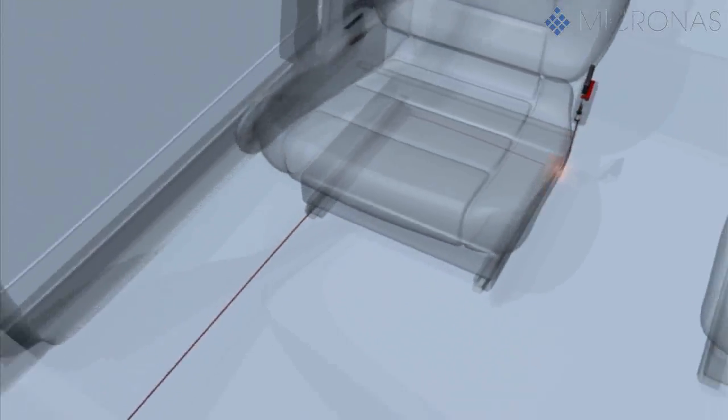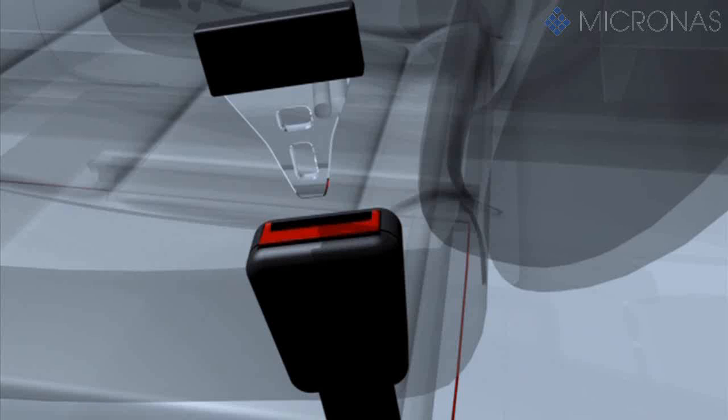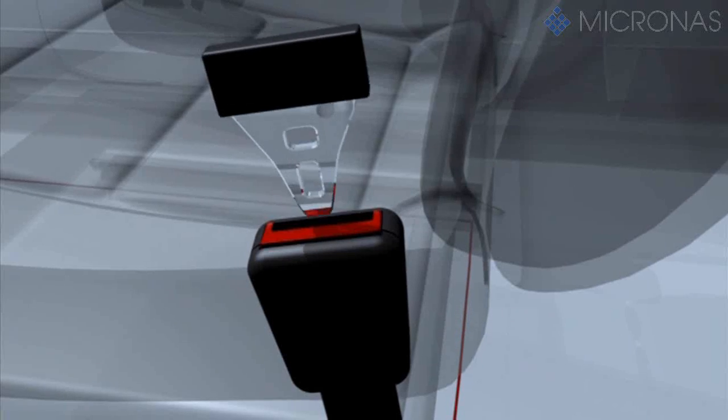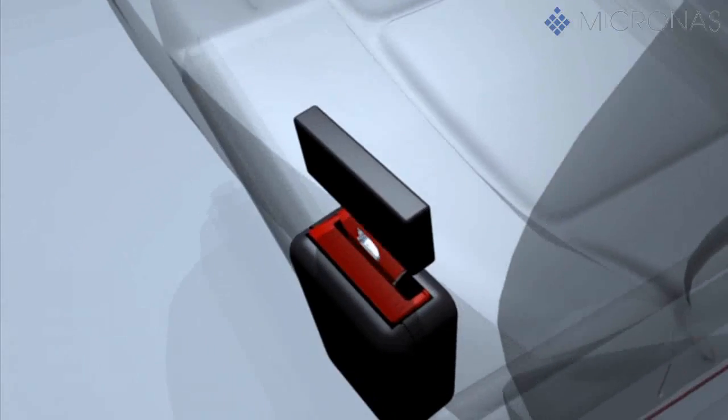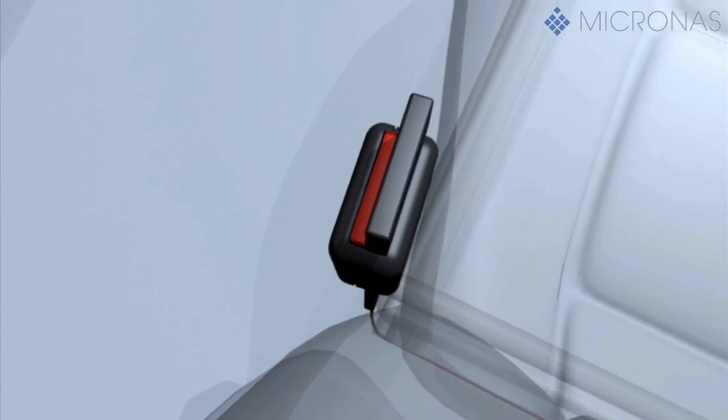The strap-in information is also transmitted to the airbag control unit via the hall sensor. Depending on seat belt situation, the airbag will be ignited earlier or later to avoid passenger injuries caused by the airbag.